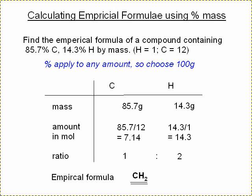You can do the same using a percentage mass. So find the empirical formula of a compound containing 85.7% carbon, 14.3% hydrogen by mass. So the percentage mass you can apply to any amount. So you can just choose that we had a total of 100 grams, which would suggest that you had 85.7 grams of carbon, 14.3 grams of hydrogen.